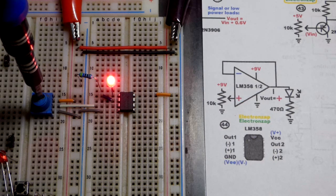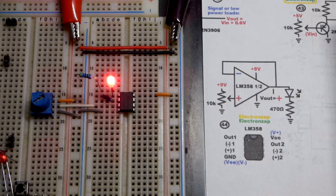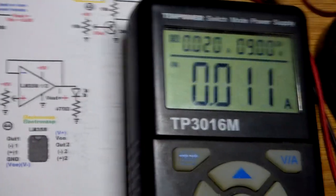You can see the LED gets brighter as I turn the trim pot closer to the positive supply. We have the power supply set to 9 volts.